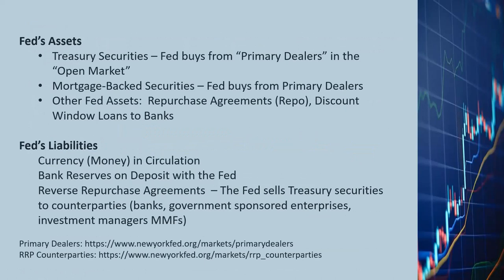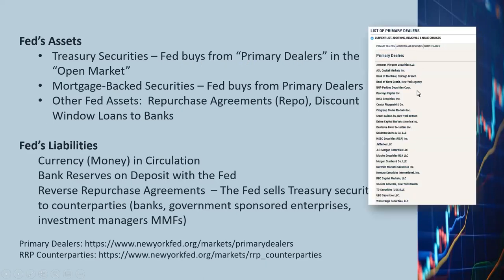So what are the Fed's assets? The Fed's assets include treasury securities that the Fed buys from the primary dealers. Who are the primary dealers? There are only about a couple of dozen of them according to the Federal Reserve Bank's website — they are mostly the major banks. The Fed also has in its total assets mortgage-backed securities, also purchased from the primary dealers. And then there are other assets including repurchase agreements (repo) and discount window loans to banks.